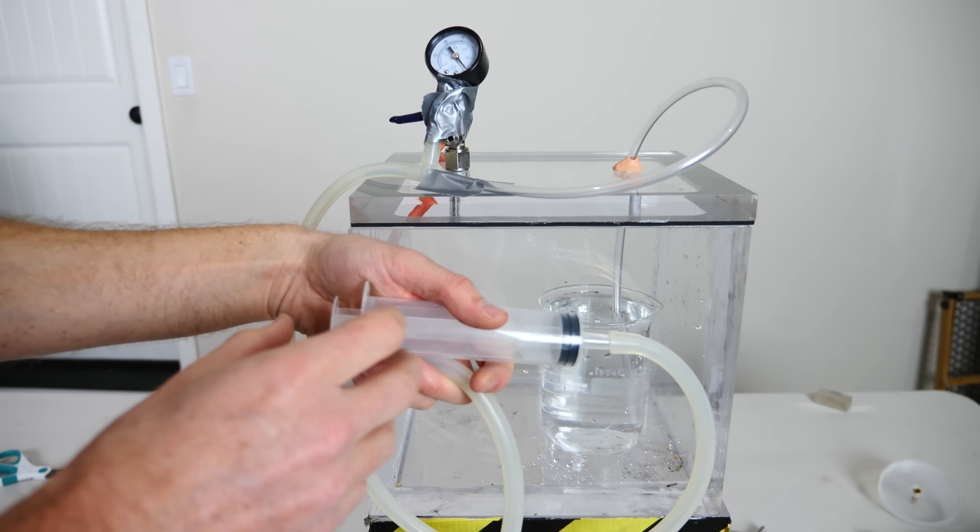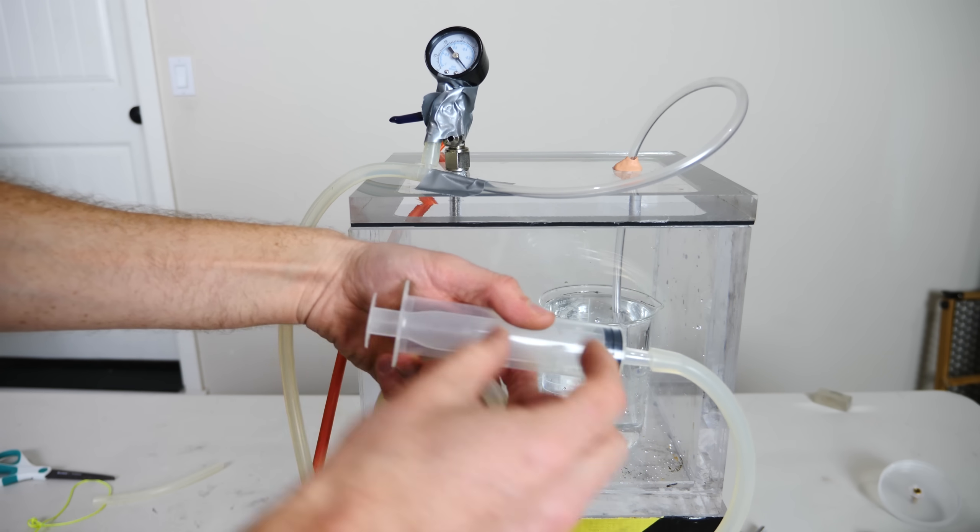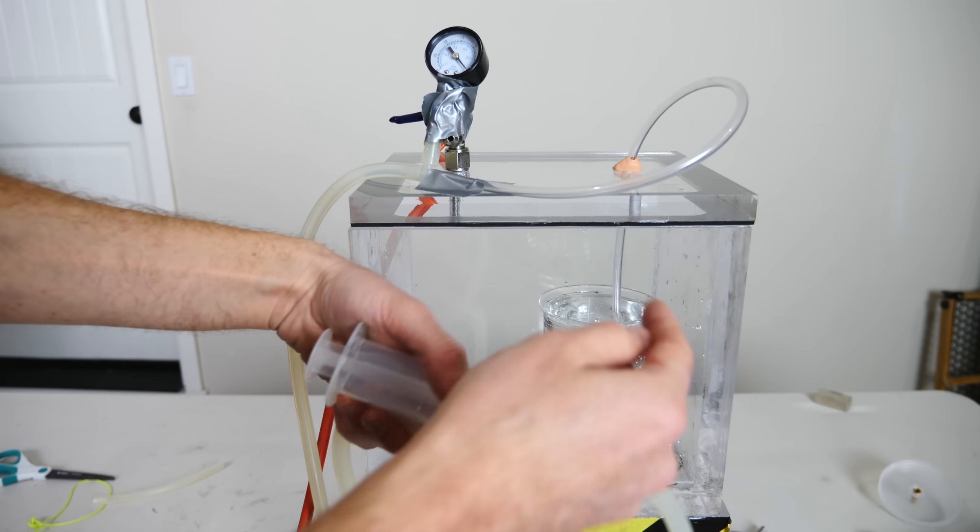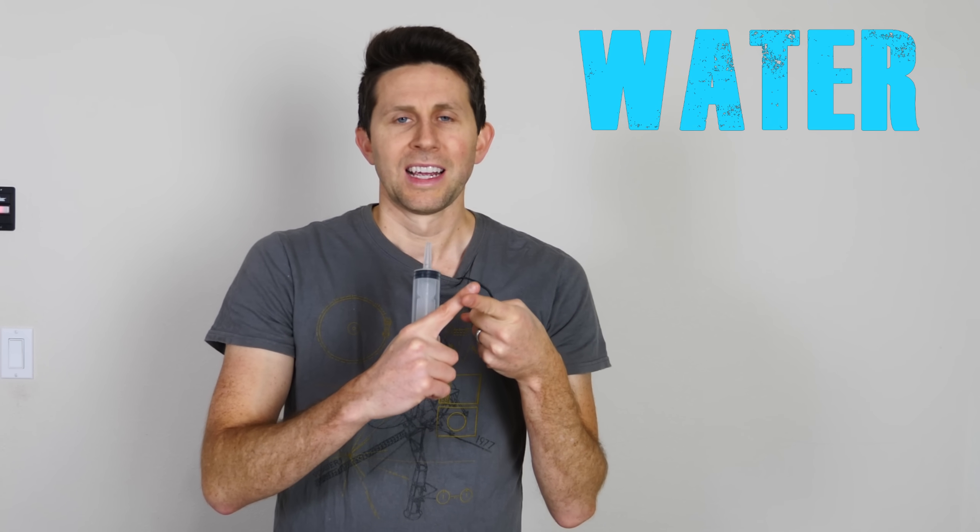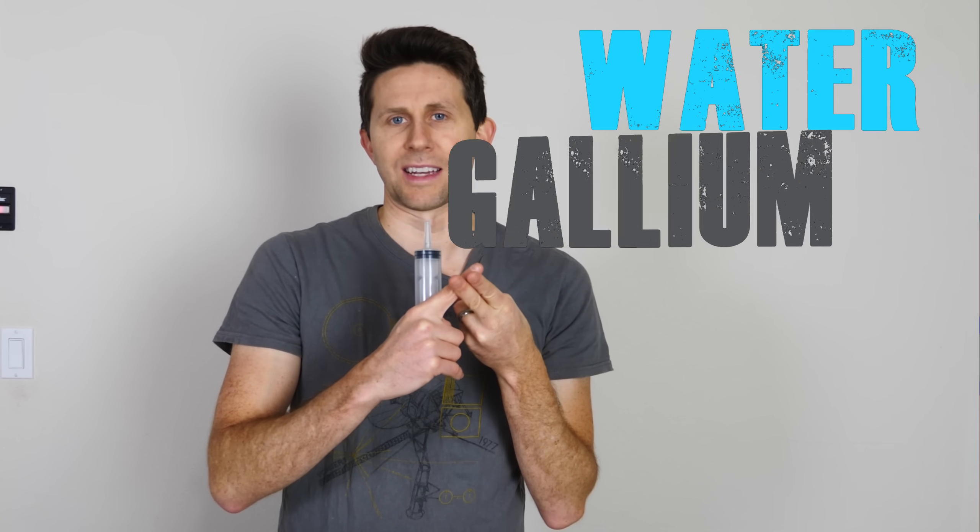And then once it's under vacuum completely what I'm going to do is actually pull the syringe so that it pulls a volume in there and see if any water actually comes up that tube here. So I'm going to be trying this experiment with two different liquids. The first one I'll try with water and then the next one I'll try with a liquid metal gallium because they have different vapor pressures.